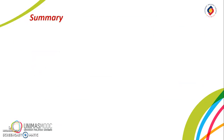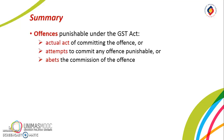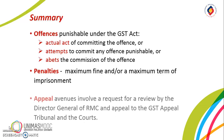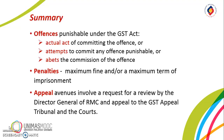To summarize this unit: note that not only the actual act of committing an offence is punishable — also punishable is the attempt to commit the offence, or where a person abets the commission of the offence. Penalties imposed on conviction are generally a maximum fine and/or a maximum term of imprisonment. Appeal avenues involve a request for a review by the Director General of RMC, and if aggrieved by the DG's decision, an appeal to the GST Tribunal, and thereafter an appeal to the courts.